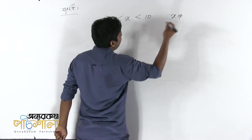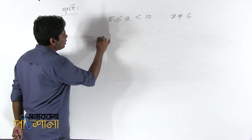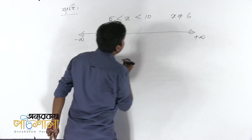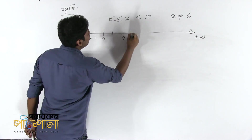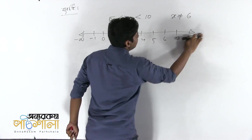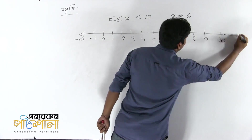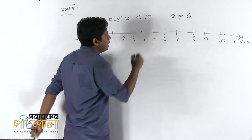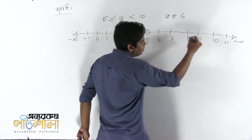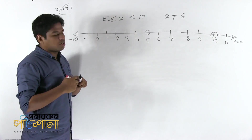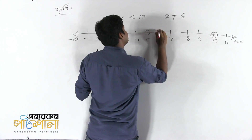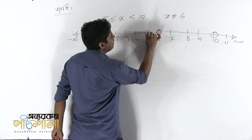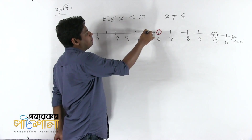I will give you the answer. Next, we will see the answer. Here we are all 4. The answer is: 1, 2, 3, 4, 5, 6, 7, 8, 9, 10. 19 is necessary. This is 5. This is 10. This is 6.